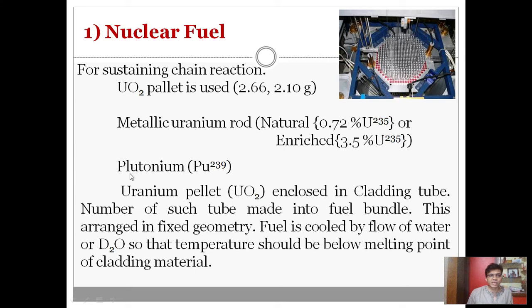Some nuclear power plants use plutonium-239 as fuel. Uranium pellets made from UO₂ are enclosed in a cladding tube — just like a coating over the uranium pellets. A number of such tubes are made into fuel bundles, arranged in a fixed geometry, and the fuel is cooled by flow of water or D₂O. The temperature should be kept below the melting point of the cladding material.